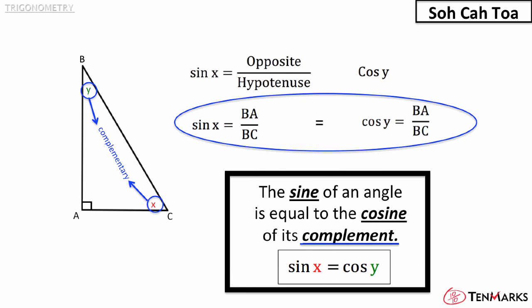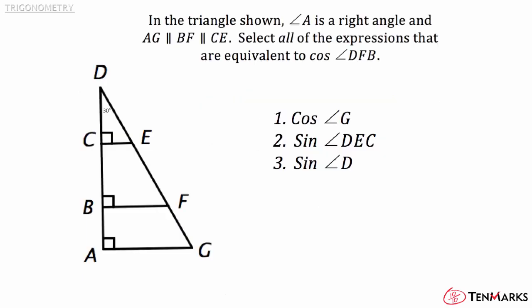With this information, try the following problem. In the triangle shown, angle A is a right angle and AG, BF, and CE are parallel to each other. Select all the expressions that are equivalent to the cosine of angle DFB.